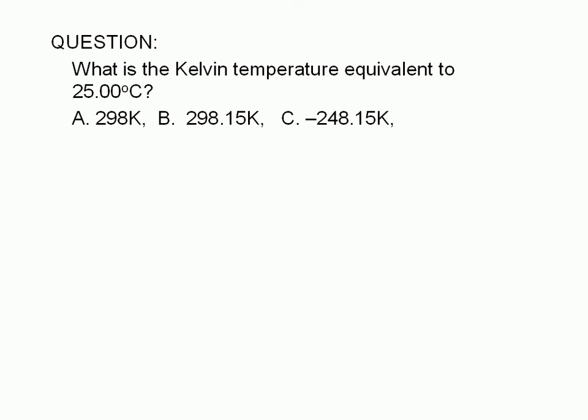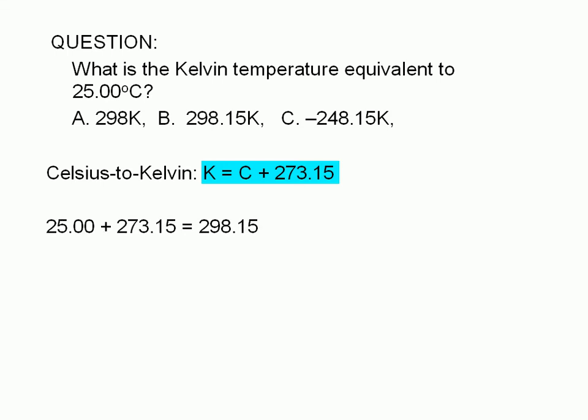To convert Celsius to Kelvin, we simply add 273.15 to the Celsius reading. 25.00 plus 273.15 equals 298.15. The Kelvin scale is an absolute temperature scale and we do not use the degree symbol when expressing temperatures in Kelvin. This scale is defined such that the lowest temperature approaches zero on this scale.